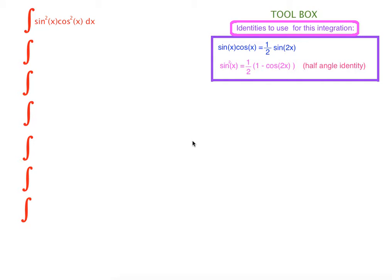Hi everyone. Welcome to Math in a Nutshell. In this video, we are going to integrate sine squared x times cosine squared x. To be able to do this integration, we need these identities — our toolbox today: the half angle identity and the sine x times cosine x identity. Let's start.